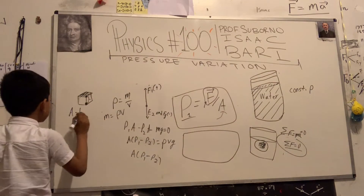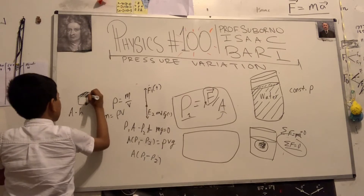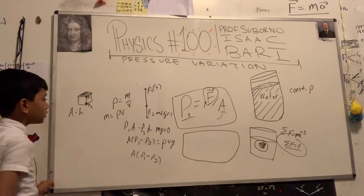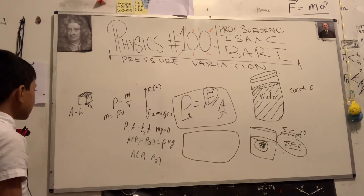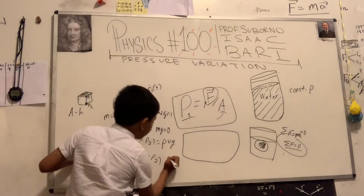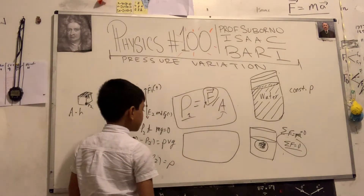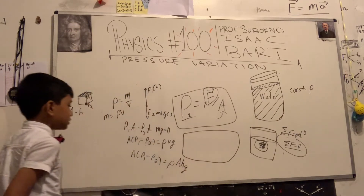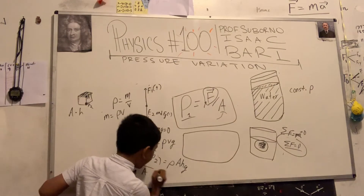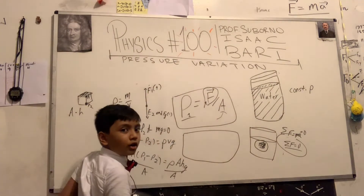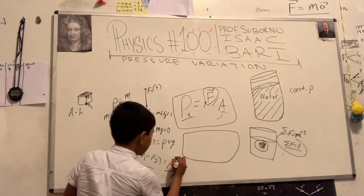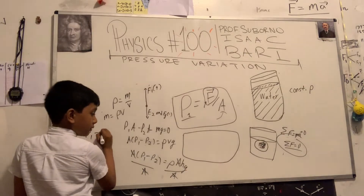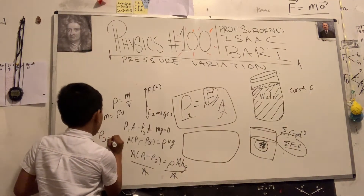Let's say this height is actually a distance between two points, P1 and P2. So volume equals A times H. That's the volume of our little cube. So we get Rho times A times H times G. Now we can divide both sides by A — which cancels out, giving us P1 minus P2 equals Rho times G times H.